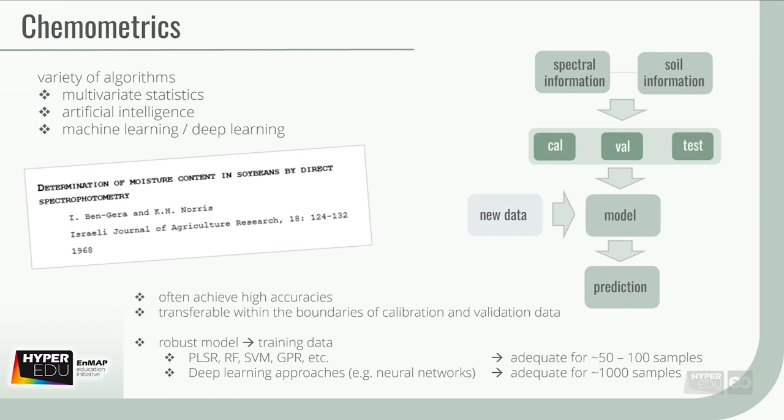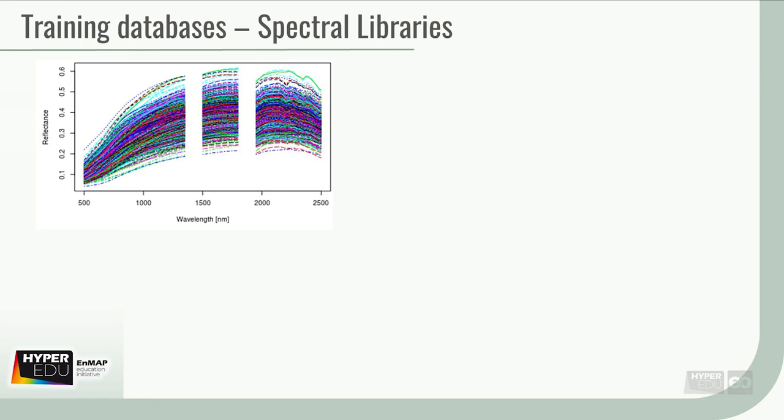Several hundred or even thousands of samples are considered the minimum. One opportunity to access large training databases are soil databases, including soil spectral libraries, that contain thousands of soil samples. Such libraries are assembled from dried and sieved soil samples, usually to less than 2 mm particle size, and acquired predominantly under laboratory conditions.